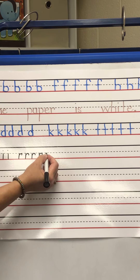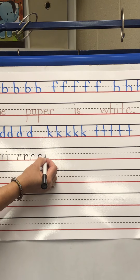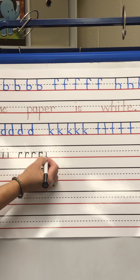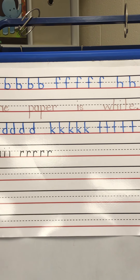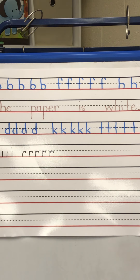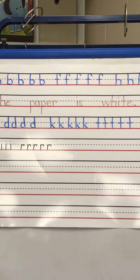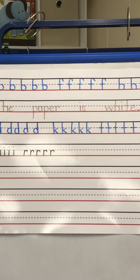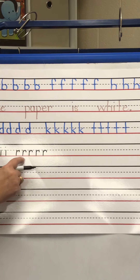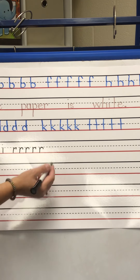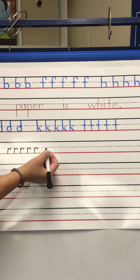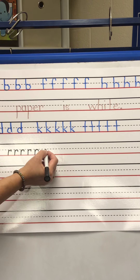And one more lowercase R - little line down, back up with a bump. Make sure you're starting on the dotted line. Now let's practice X.